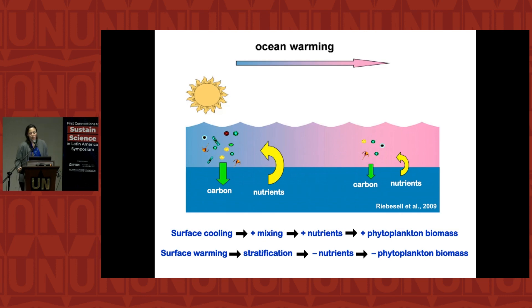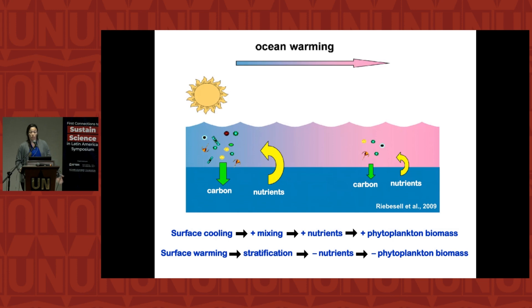In the open ocean, when the surface warms, stratification is created because of the density gradient. The nutrients in deep waters that phytoplankton — the microalgae in the oceans — need to grow can't come to the surface where light is available for photosynthesis. So if the surface ocean warms, there are fewer nutrients and less phytoplankton will grow.